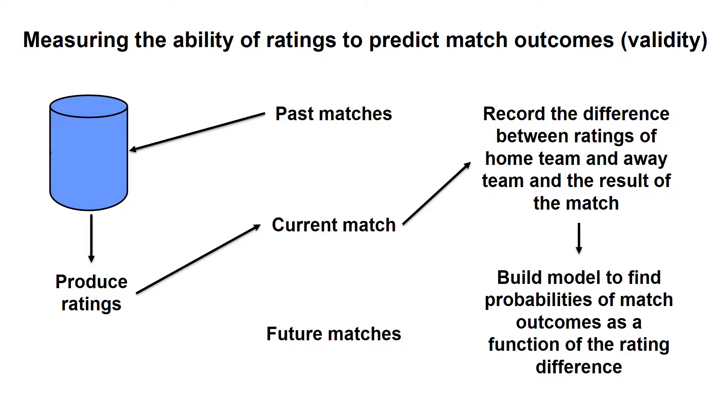We will then build a model that can use those observations of rating differences and match outcomes to predict outcomes of future matches, given the knowledge about the difference in average ratings between the teams playing. Those predictions will be used for future matches and compared with the actual outcomes of those future matches. We will then measure the quality of the predictions made. The main idea is that when we have access to better ratings, we should be able to better predict the outcomes of matches.